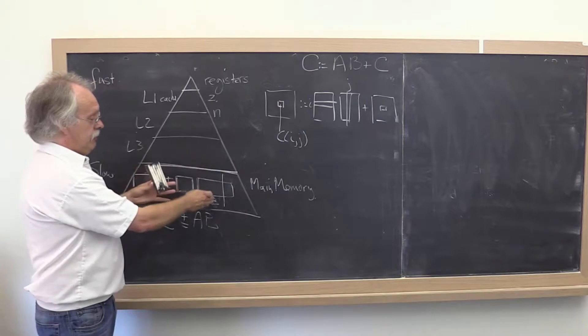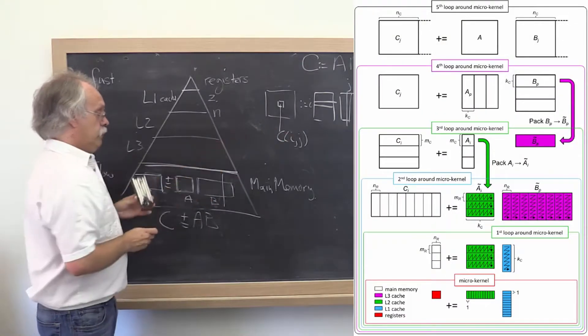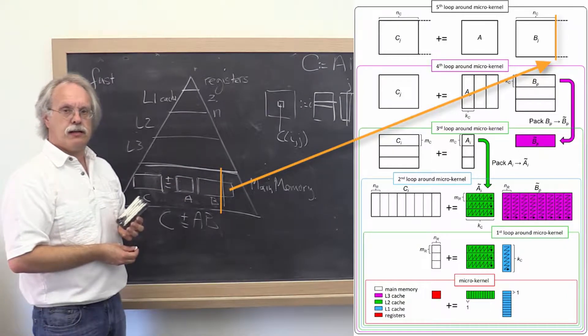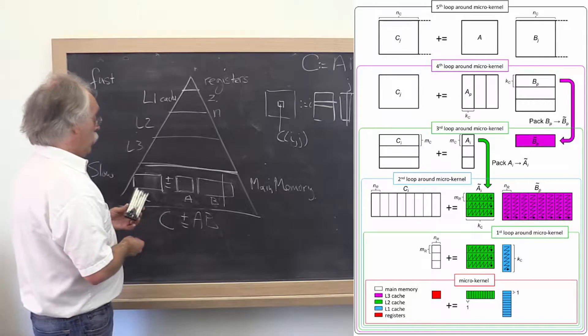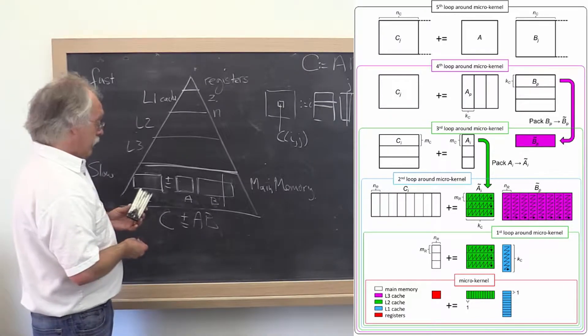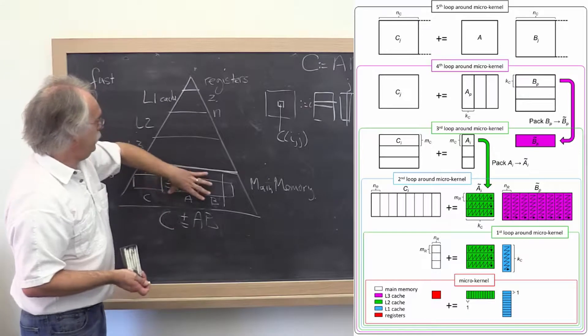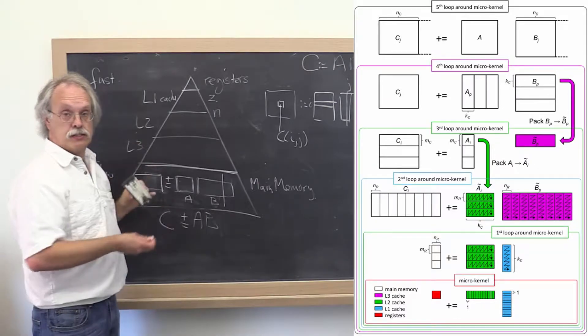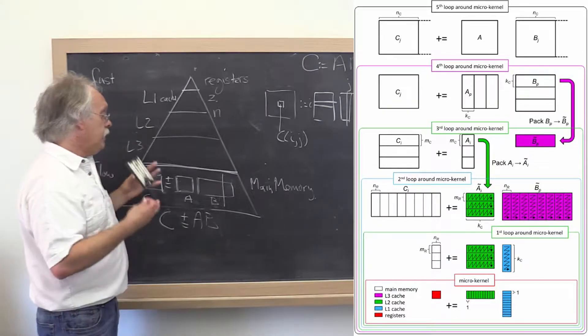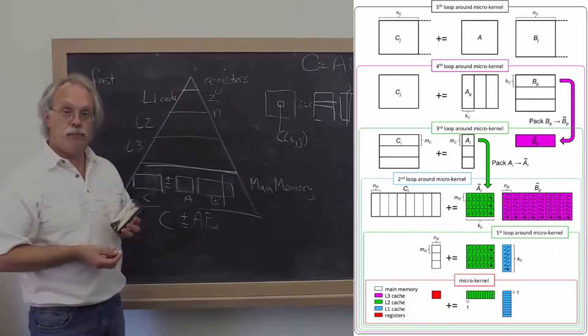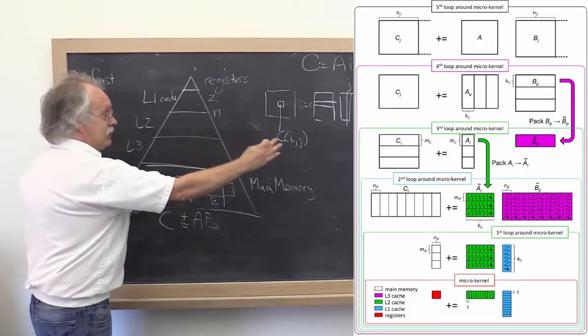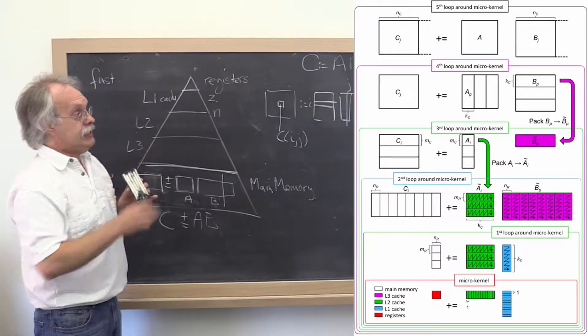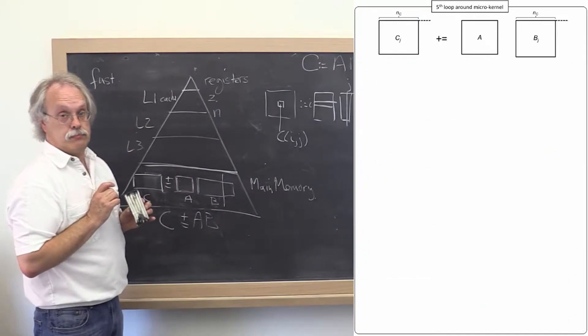And it turns out, at the outermost level, you end up blocking B vertically, which was one of the algorithmic variants that we systematically derived. Then what happens? Well, none of this fits in the L3 or L2 or L1 cache if these matrices are large enough. So you end up blocking some more. The algorithm that partitions in that direction is actually the algorithm that in the picture over there is the outermost loop.